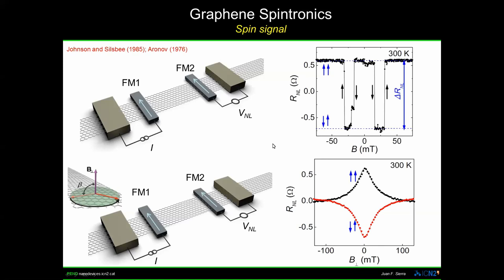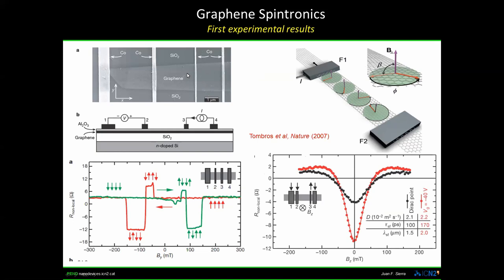I want to show the seminal work done in Van Wees' group in Groningen. You see an image of the lateral device — a graphene flake with several ferromagnetic electrodes attached. By performing this non-local measurement, they first demonstrated the sharp changes in the spin signal when applying the magnetic field along the easy axis of the ferromagnets, and also this key experiment applying the magnetic field out of plane, where they observed beautiful Hanle curves from which you can extract all spin-dependent parameters like the spin-diffusion length and spin lifetime.